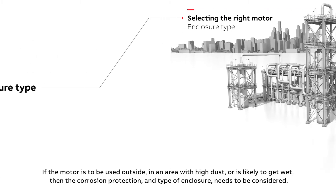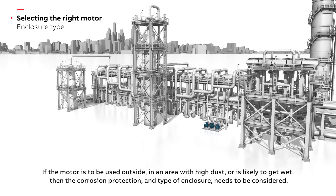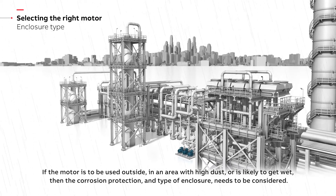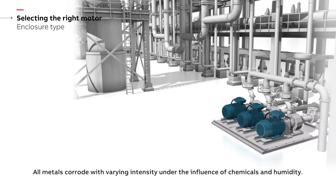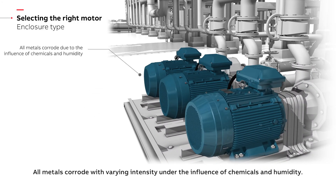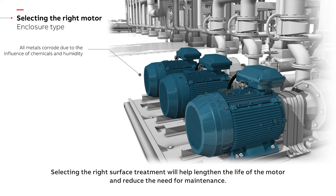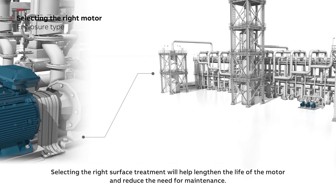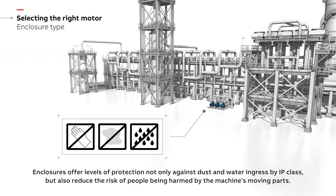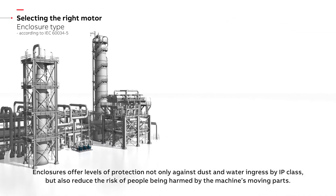If the motor is to be used outside in an area with high dust or is likely to get wet, then the corrosion protection and type of enclosure needs to be considered. All metals corrode with varying intensity under the influence of chemicals and humidity. Selecting the right surface treatment will help lengthen the life of the motor and reduce the need for maintenance. Enclosures offer levels of protection not only against dust and water ingress by IP class, but also reduce the risk of people being harmed by the machine's moving parts.